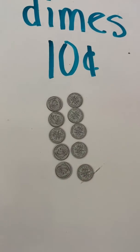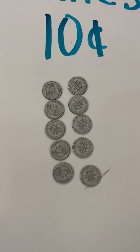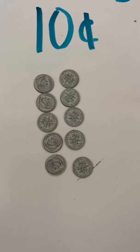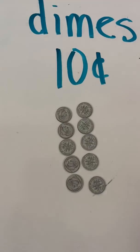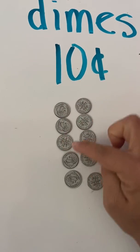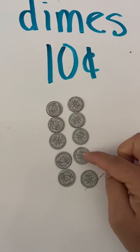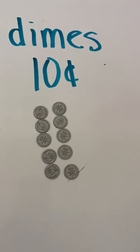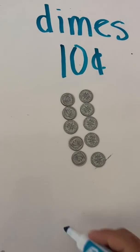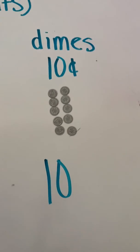That was a little quicker and easier. I had enough coins. I made a dollar with how many dimes? 1, 2, 3, 4, 5, 6, 7, 8, 9, 10 dimes. 10 dimes make a dollar.